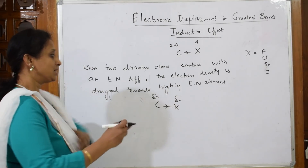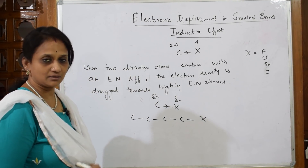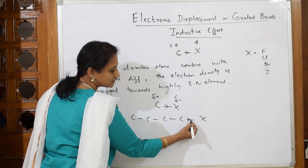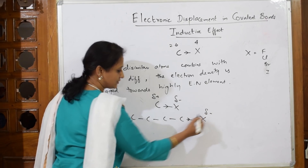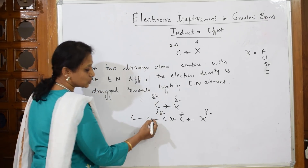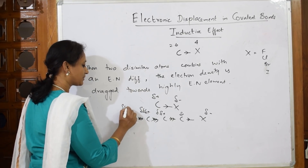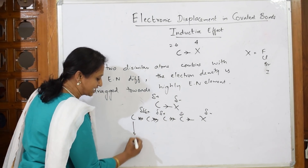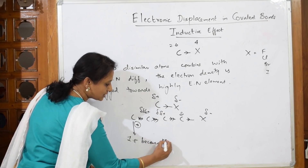Consider a chain of four carbons — C1, C2, C3, C4 — with a halogen or electronegative element at one end. Being highly electronegative, it drags electron density towards itself. So X becomes partial negative, C1 becomes partial positive, C2 becomes doubly positive, and so on along the chain. At C4, the inductive effect becomes weak or negligible.